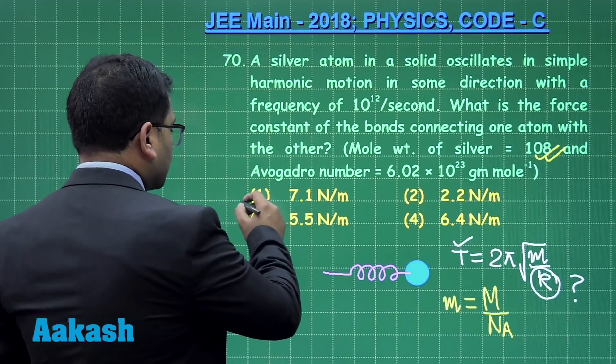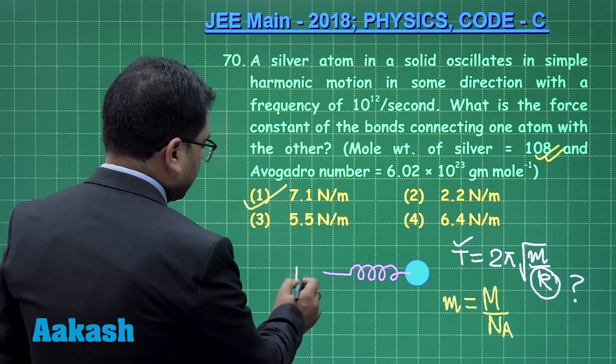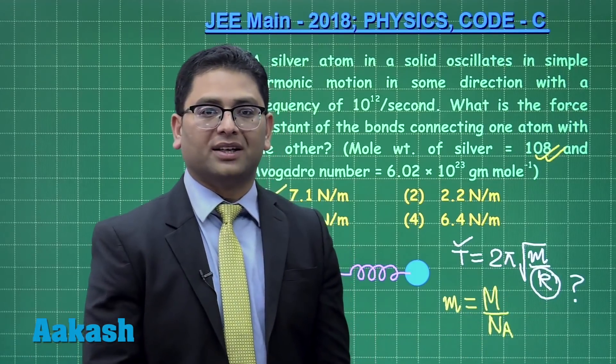You are going to get 7.1 newton per meter. A slight amount of calculation is there but not a big deal. So that lands us to option number 1 as the correct answer. For question number 70, the correct option is option number 1.